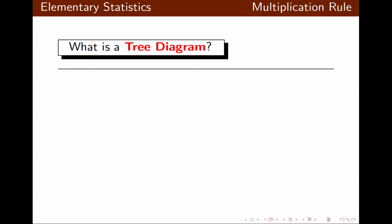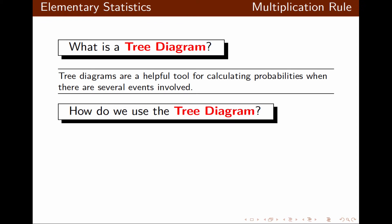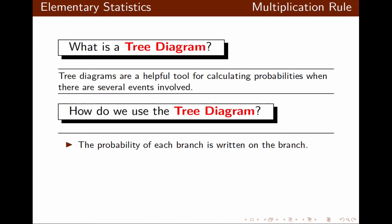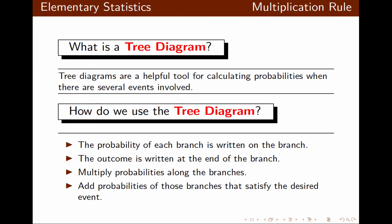Now here comes the tree diagram, which will help us a great deal with the multiplication rule. When using a tree diagram, we write the probability of each branch, and the outcome is written at the end of each branch. We multiply probabilities along the branches, then add the probabilities of the branches that satisfy the desired event.